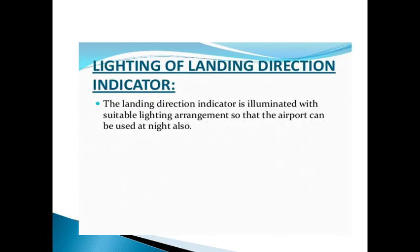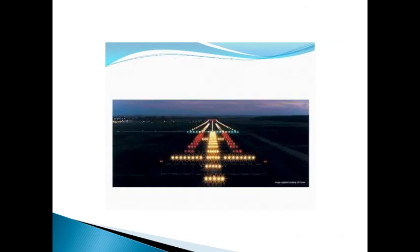Next is the lighting of the landing direction indicator. When an aircraft is about to land, the proper direction of landing must be indicated — the direction of landing should be parallel to the runway. This indication is given by lights. You can see in the figure how the aircraft approaches and enters into the threshold light and then the bar, which provides this directional indication.